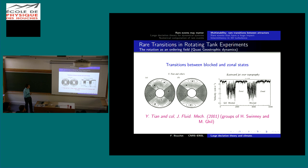What is rare here is actually the transition from one state to another. In climate we may imagine this could happen. The key point is that the time you need to wait to see a switch from one attractor to another is usually much longer than what people typically compute numerically. So if such a possibility exists in your climate model, you probably don't know because you haven't looked for it.